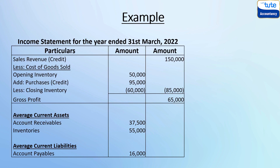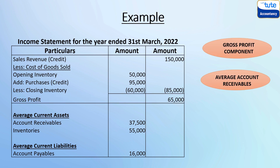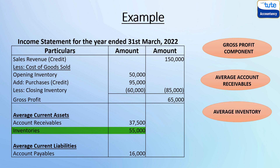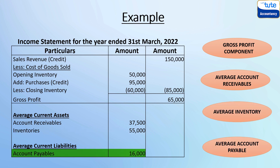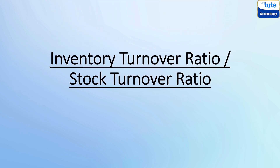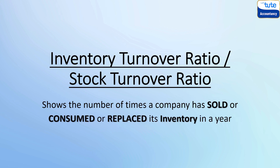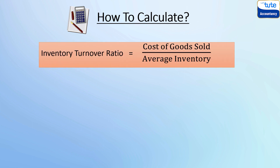This is an income statement that gives us the details specifically about the gross profit component, and also the average values of account receivables, inventory and account payables are available. Here we have only focused on the basic operations of sales and purchases of goods which is essentially required for learning more about this last set of activity ratios. Firstly, we shall look into inventory turnover ratio, which is also known as stock turnover ratio, which shows the number of times a company has sold or consumed or replaced its inventory in a year. It is calculated by dividing cost of goods sold by average inventory.